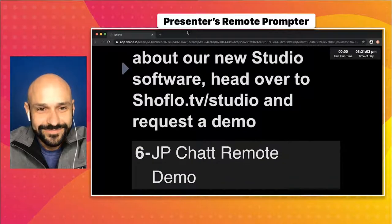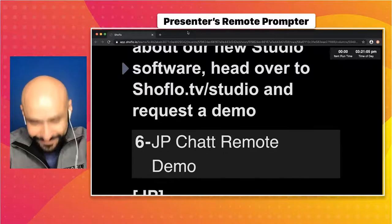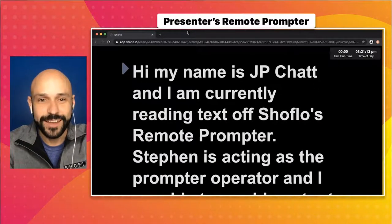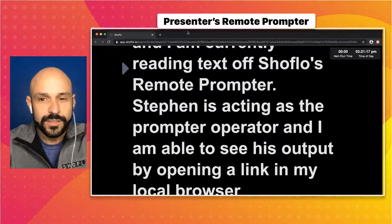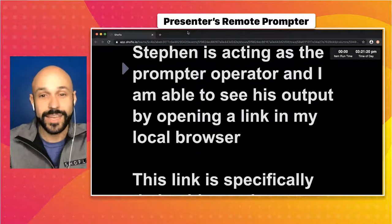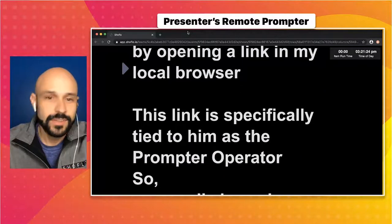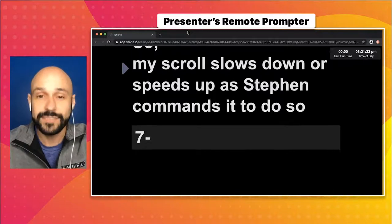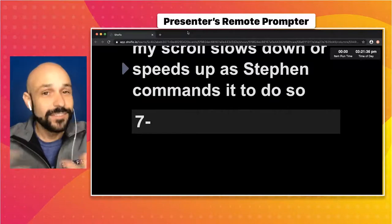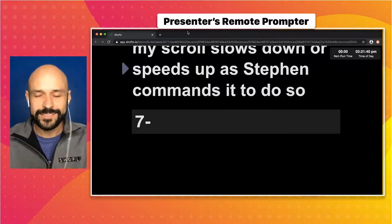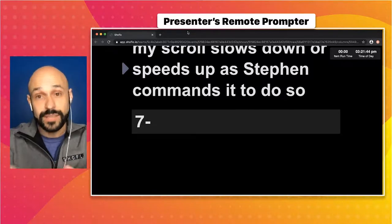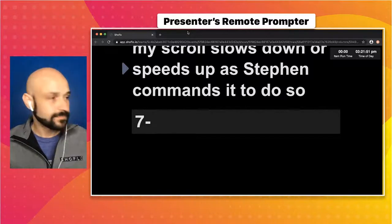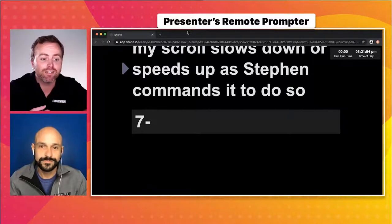I'm adding JP's screen share live, removing myself from the stream, and bringing up a nice overlay so we know it's the remote presenter screen. I'm taking JP to his segment, and I'll pretend to be the previous presenter and then toss to him. 'Studio software — head over to showflow.tv and request a demo. JP, over to you.' JP: 'Hi, my name is JP Chat and I'm currently reading text off of ShowFlow's remote prompter. Steven is acting as the prompter operator and I can see his output by opening a link in my local browser. This link is specifically tied to him as the prompter operator, so my scroll slows down or speeds up as Steven commands it.'